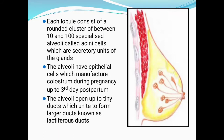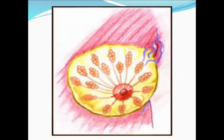Each lobule consists of a rounded cluster of between 10 and 100 specialized alveoli called active cells, which are the secretory units of the glands. The alveoli have epithelial cells which manufacture colostrum during pregnancy up to the third day postpartum. The alveoli open up to tiny ducts which unite to form larger ducts known as lactiferous ducts.